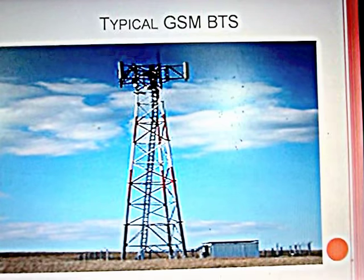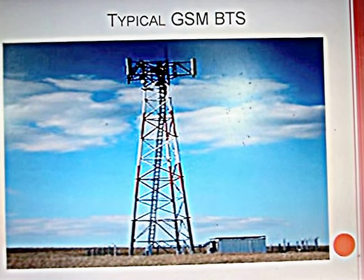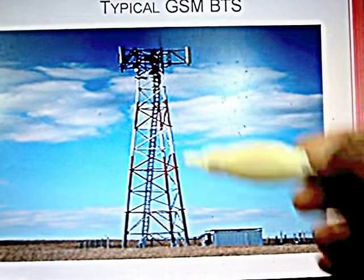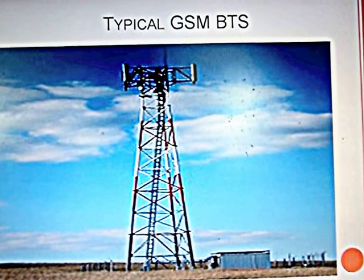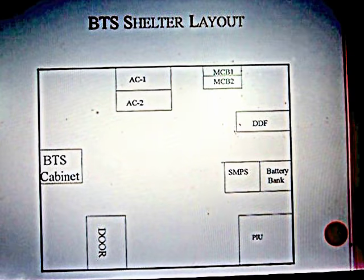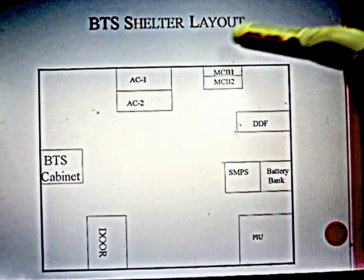This is the diagram of a typical GSM BTS. A GSM cell site consists of a shelter and a tower. In the figure you can see the tower and the shelter. This is a figure which is showing the BTS shelter.